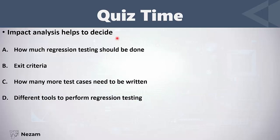So the correct answer is: the component in production has been removed. Impact analysis helps us decide — the reason for using impact analysis is to know the impact of our changes, in order to determine how much regression testing we should do.